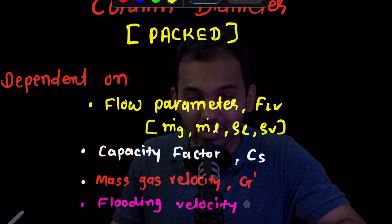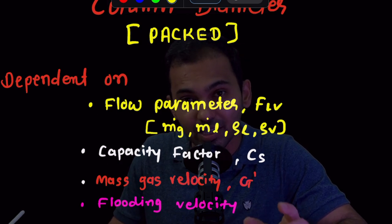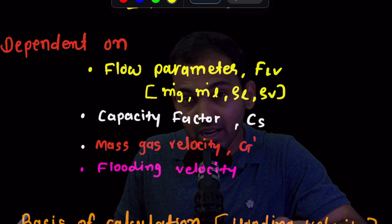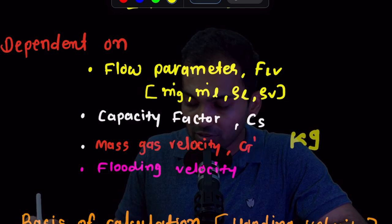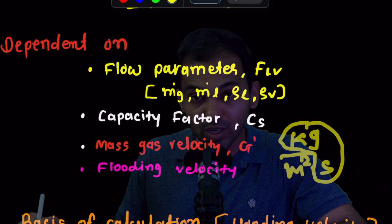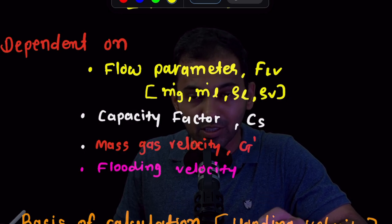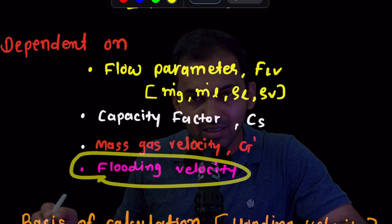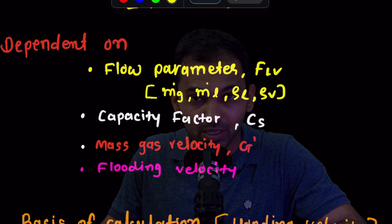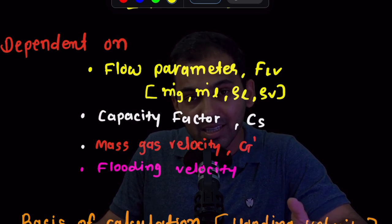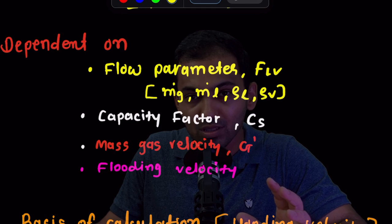The capacity factor especially relates to the fluid and the packing material — whichever packing material is being used — because it brings in packing factor, interfacial area, and void fraction. Third, which is important, is mass gas velocity indicated by G', with units kg per meter squared per second — it is mass flow rate per unit area, very important for diameter calculation. Finally, flooding velocity is important because it tells us the maximum velocity at which flooding occurs. We take 60 to 70 percent of that as actual velocity, and from that we can find out the tower diameter.